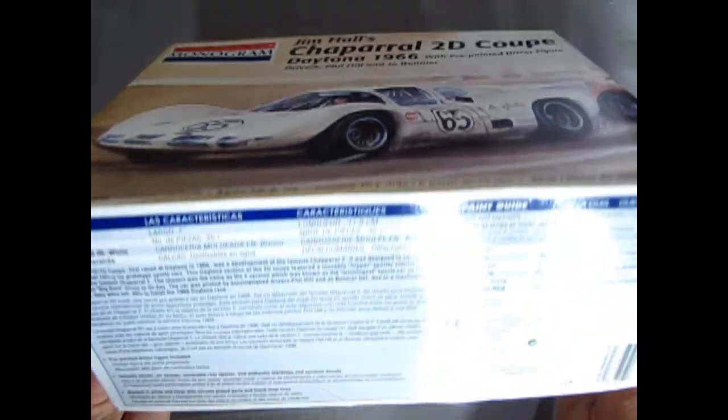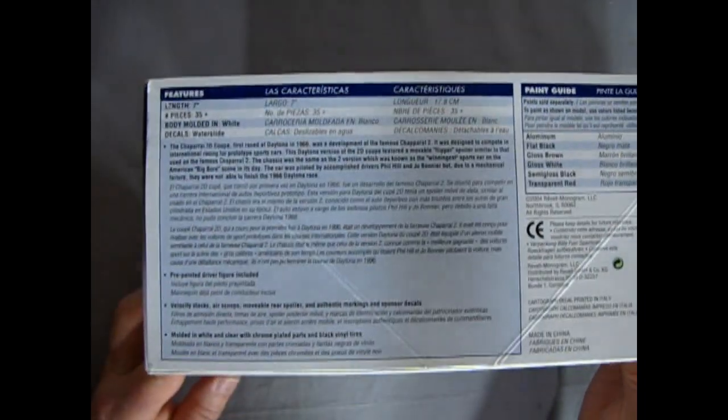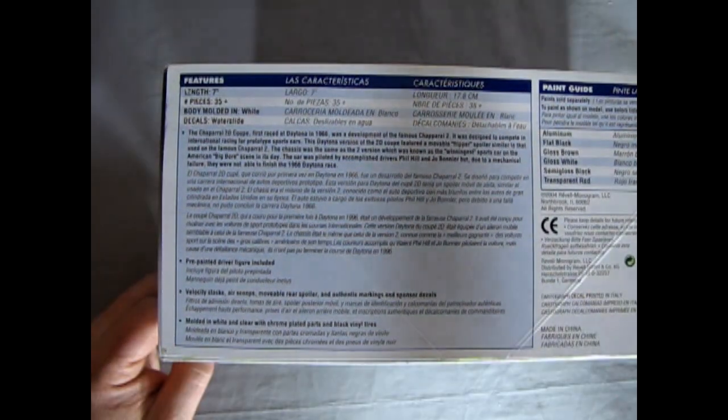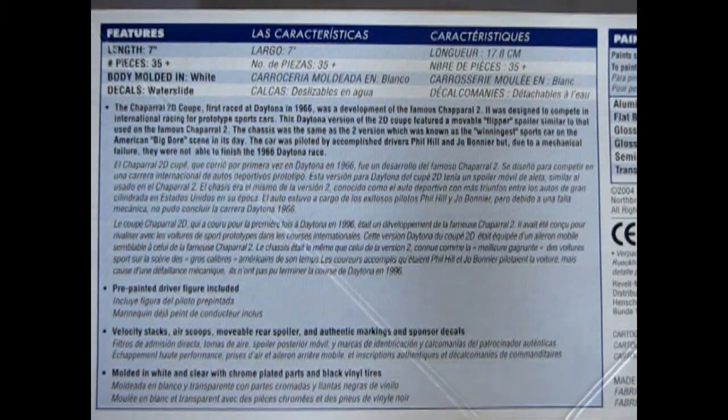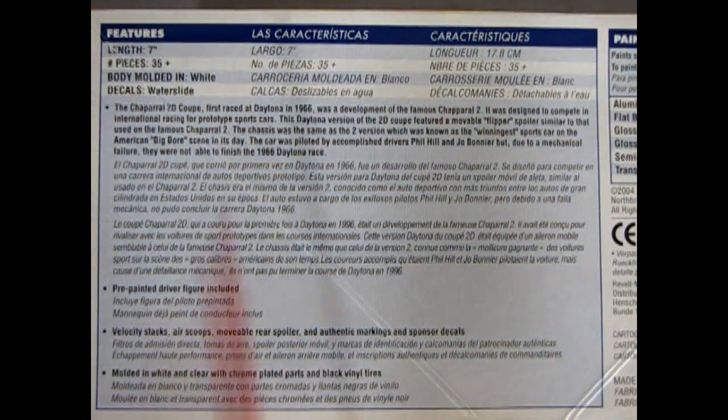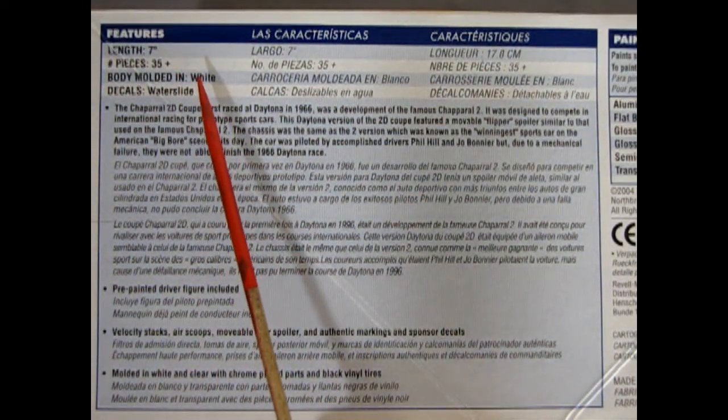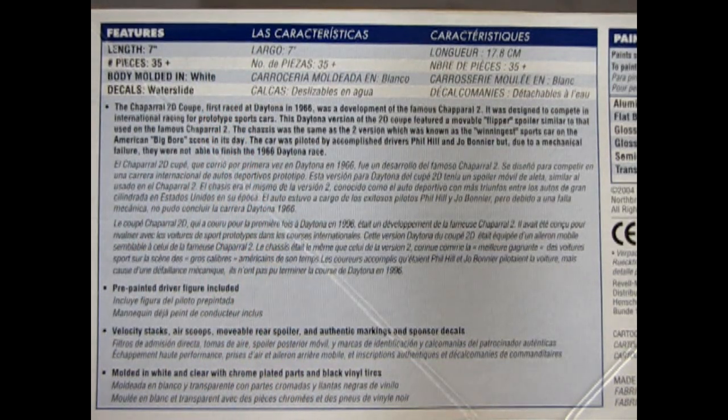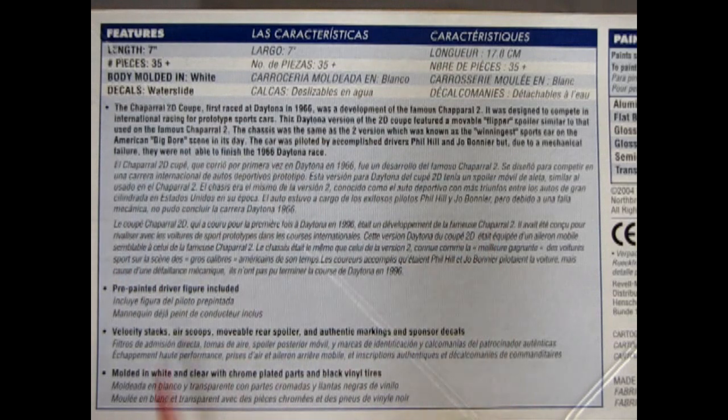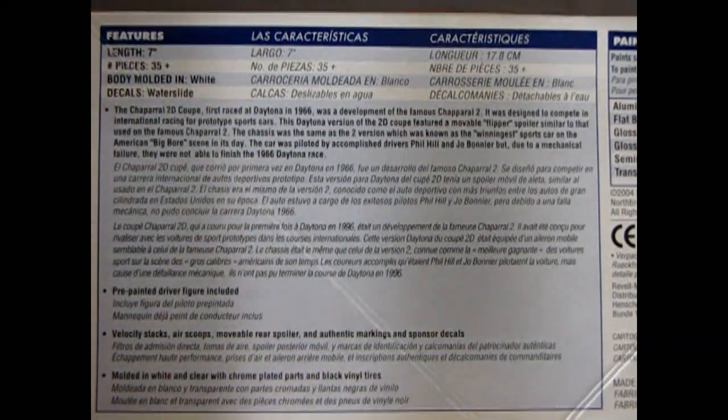Alright, let's just take a look at the sides of this box here. First off, you can just zoom in on this panel. So what we have here is a model kit that is 7 inches in length with 35 pieces, molded in white, and the decals are water slide. And in here we get a whole bunch of cool details. So first off, the history.